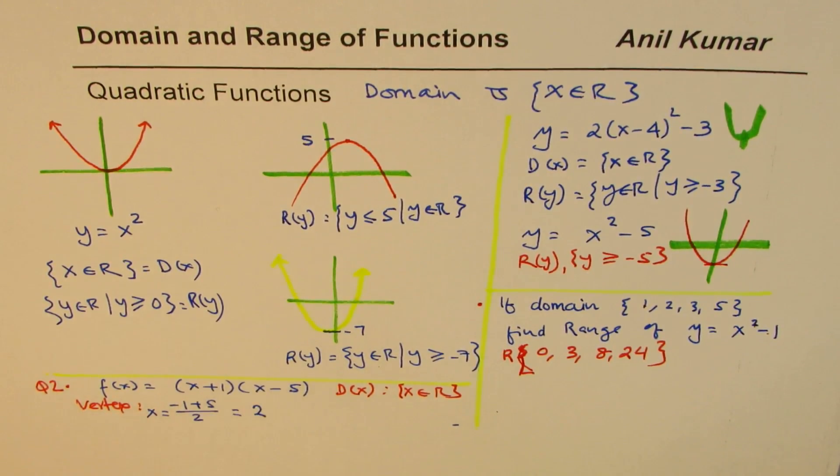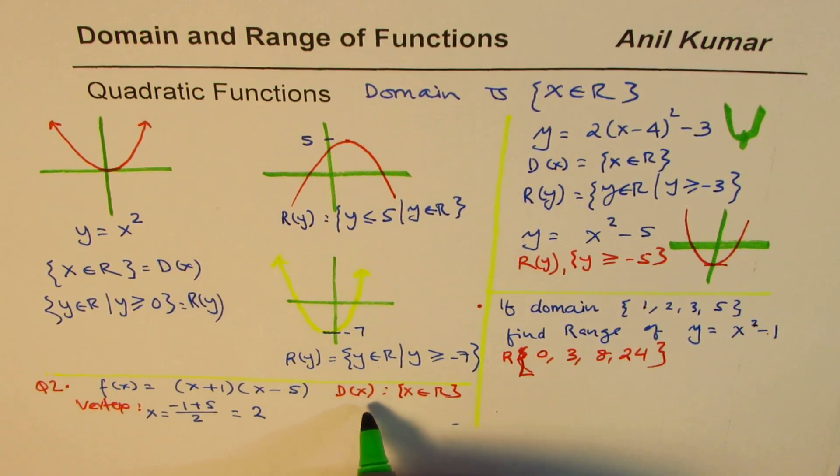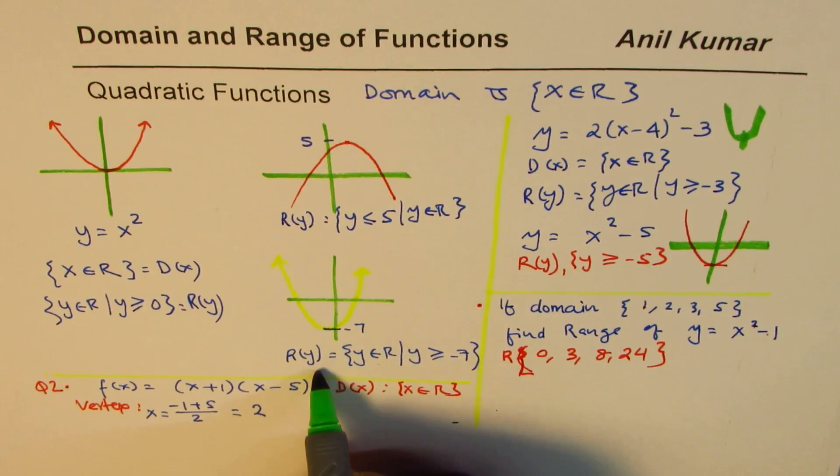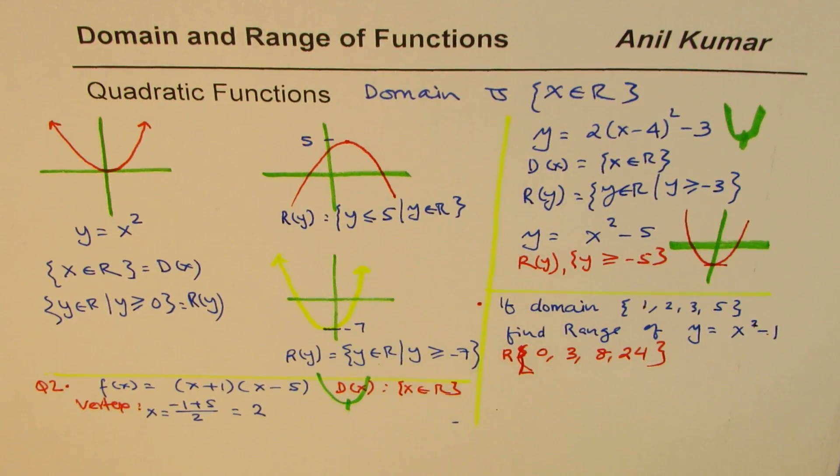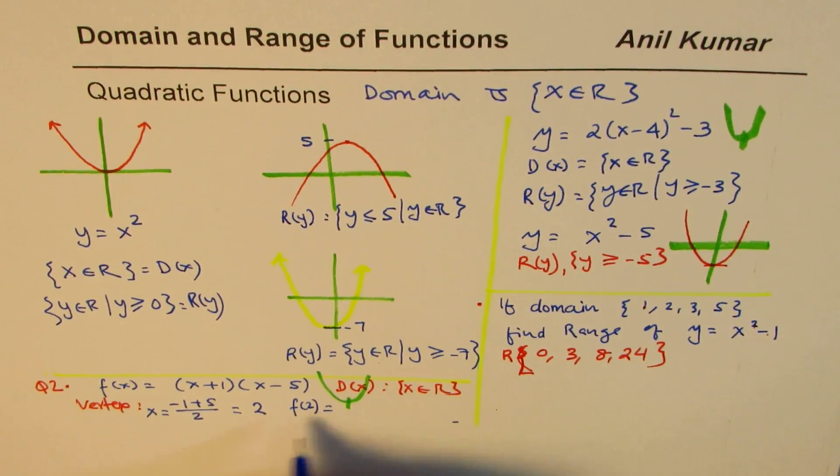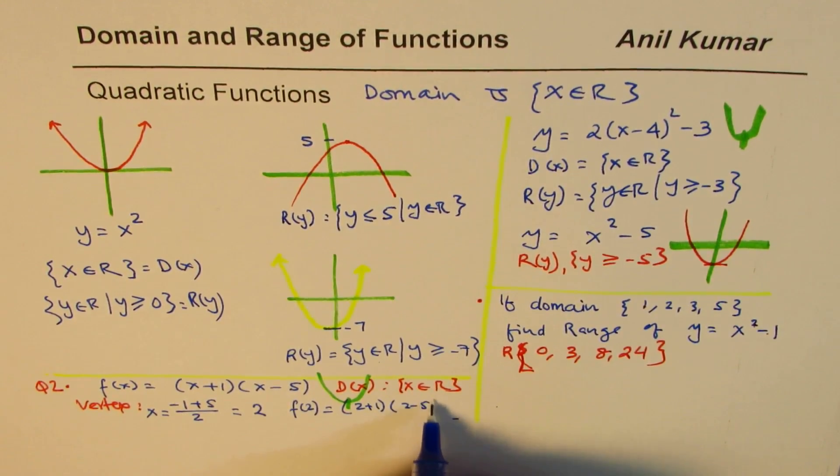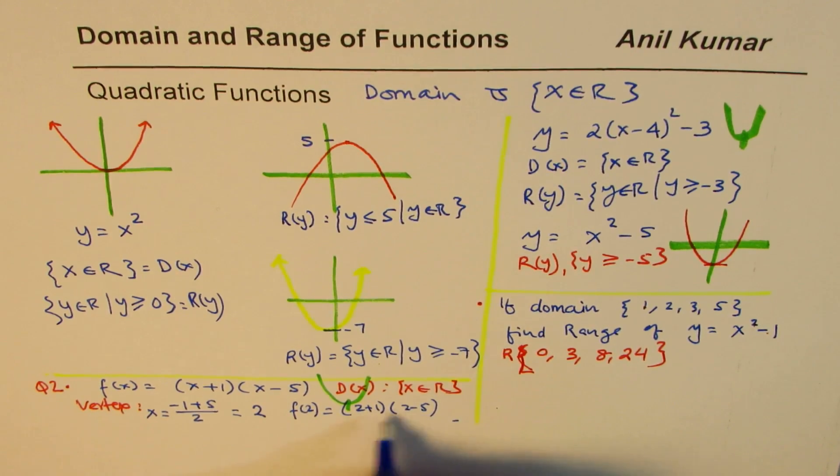So the x-coordinate is 2. Now this parabola opens upwards, since both coefficients are positive, so it opens upwards. We need to find the vertex. So we'll find the value of the function at 2. So if I substitute 2 here, I get (2 plus 1) times (2 minus 5). So 3 times negative 3, which is minus 9.